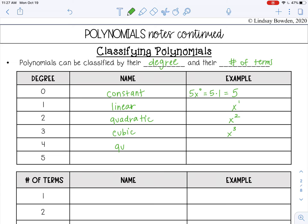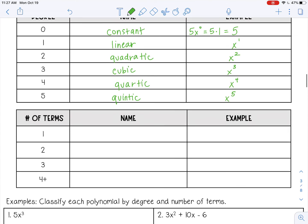To the fourth power is called quartic, so x to the fourth power. And to the fifth power is quintic.